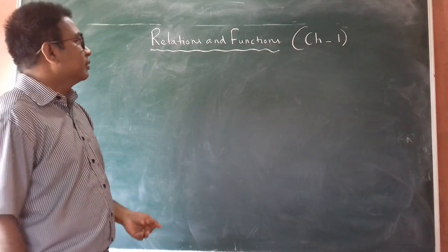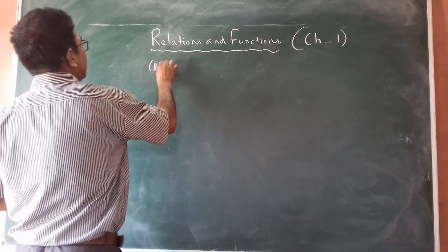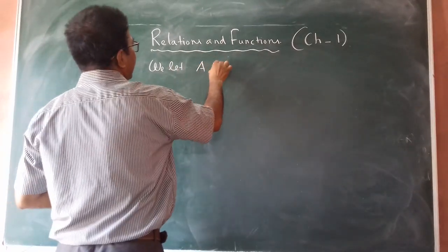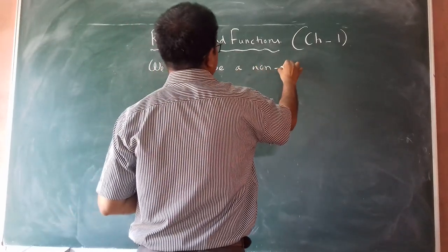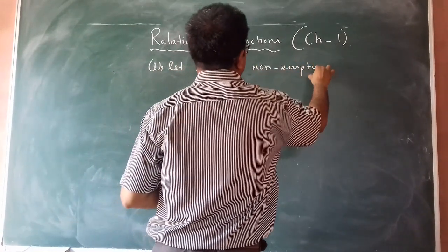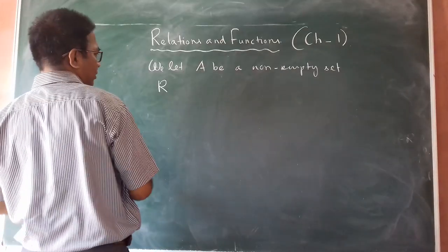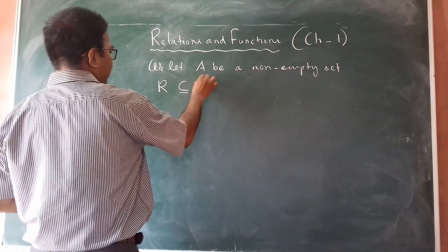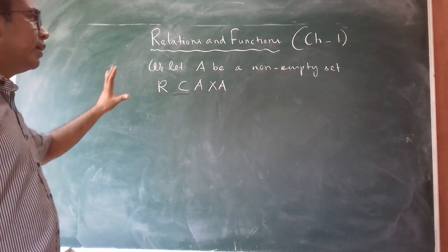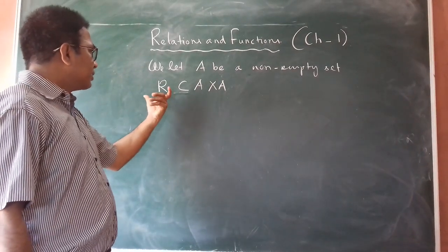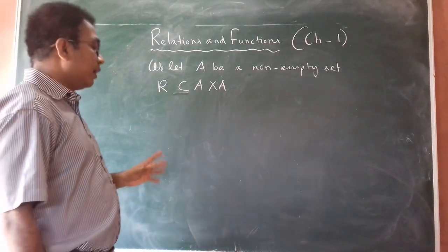So what is a relation? Let A be a non-empty set. Then any set R which is a subset of A cross A is called a relation on A. We define a set R such that it is a subset of A cross A, and it is called a relation on A.